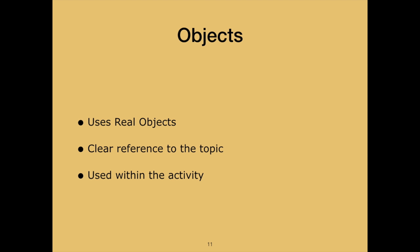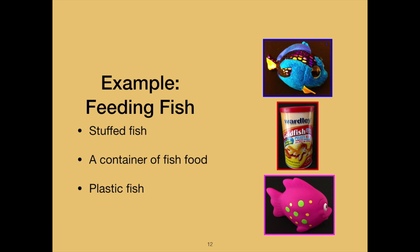This will help the student transition to a more abstract form of object calendar system if your educational team determines that the student is ready. As stated earlier, selecting objects is based on the individual student's needs. For the purposes of this presentation, I selected objects for a student who is at the concrete level of learning and has a significant visual impairment, so parts of objects and picture or photograph-based systems will not be adequate. The main points to remember are that we need to initially use real objects that will act as a tactual reference to the activity and will actually be used during the activity. The objects need to be meaningful to the student and have a clear, tactual, understandable relationship to the activity itself.